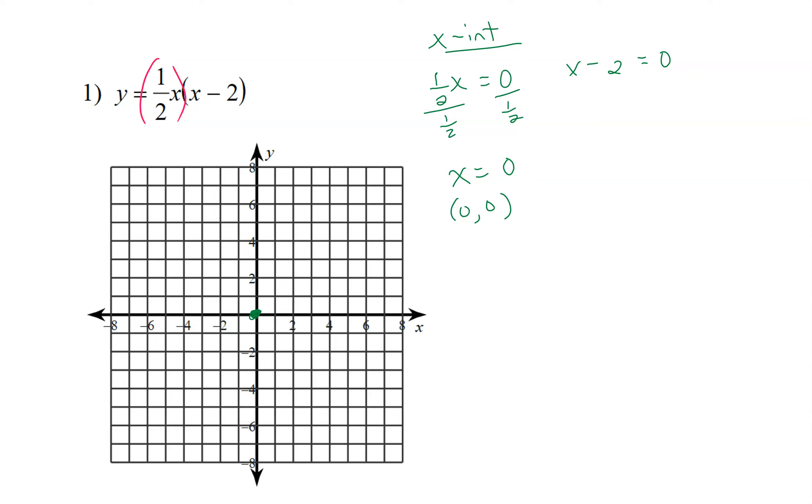For the second x-intercept, we're going to solve for x by adding 2 to both sides. We get x is equal to 2, so our second x-intercept is (2, 0).